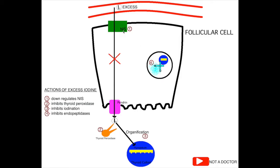As the sodium-iodine symporter is inhibited, there will be less iodine uptake by the follicular cell. Second, iodopeptides inhibit the action of thyroid peroxidase, which is responsible for the synthesis of thyroid hormone. As this enzyme is inhibited, it causes decreased synthesis of thyroid hormone. Also, organification will be inhibited.